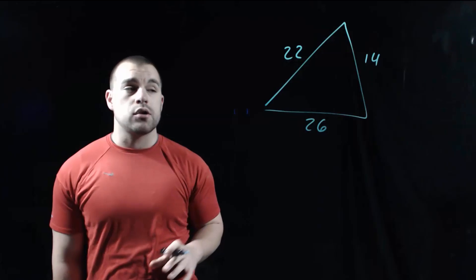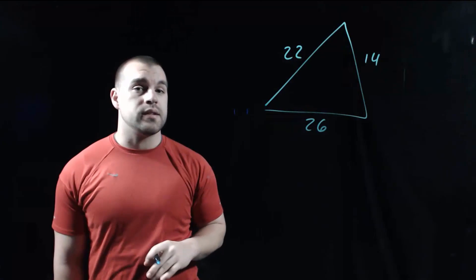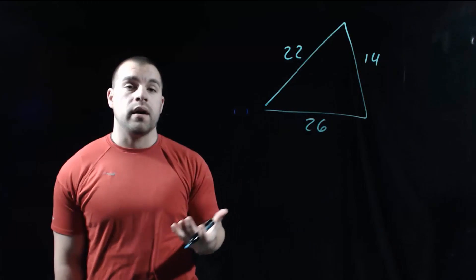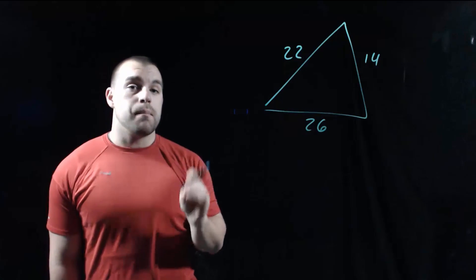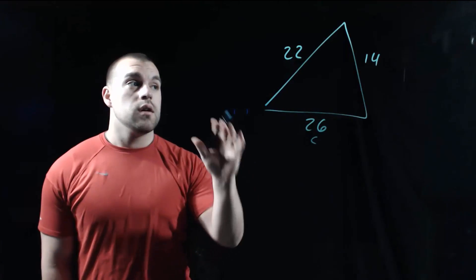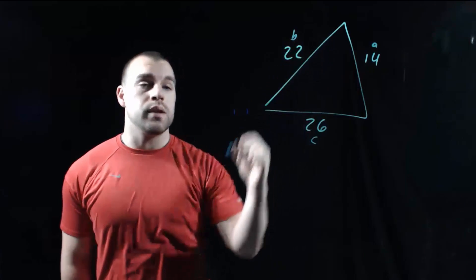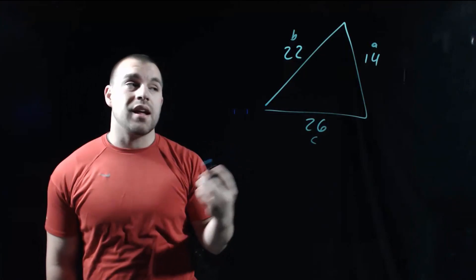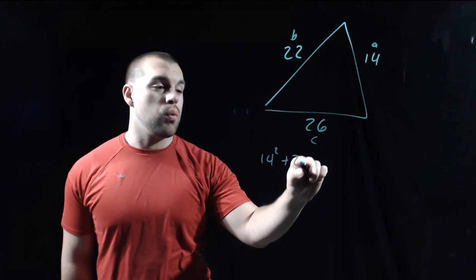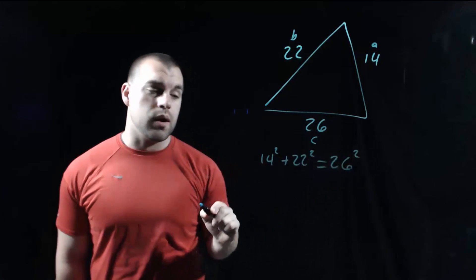In this example, we're given a picture of a triangle with side lengths of 14, 22, and 26. We want to use the Pythagorean Theorem to figure out what kind of triangle this is. The biggest side always has to be C, so that's going to be the 26. The other ones don't matter for A or B — let's call 14 A and 22 B. Setting up the Pythagorean Theorem: 14 squared plus 22 squared, checking to see if that's equal to 26 squared.